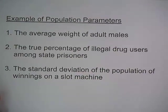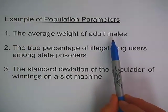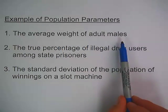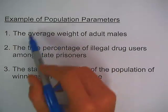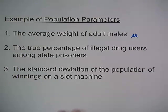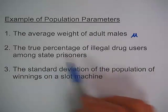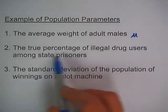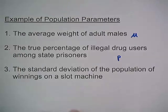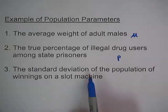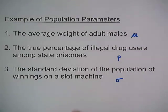Now let's look at examples of population parameters. Number one: the average weight of adult males. Here our population is all adult males, so if we're looking for the mean weight, we use the symbol mu. Number two: the true percentage of illegal drug users among state prisoners. Our population is state prisoners, and since we're calculating a proportion, we use the symbol p. Number three: the standard deviation of the population of winnings on a slot machine — a population standard deviation uses the Greek letter sigma.